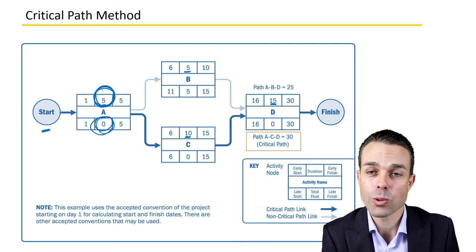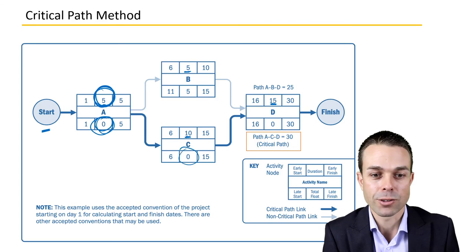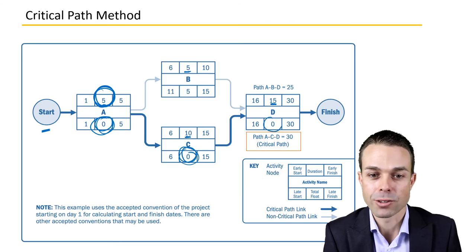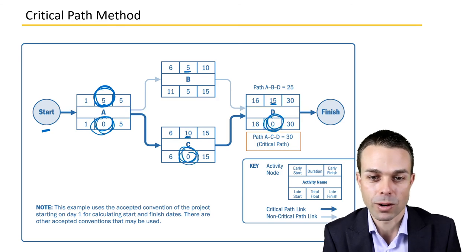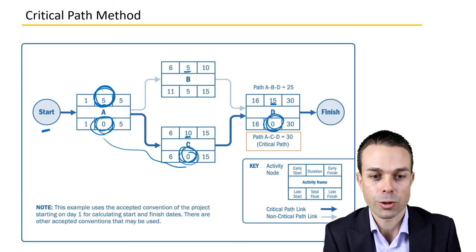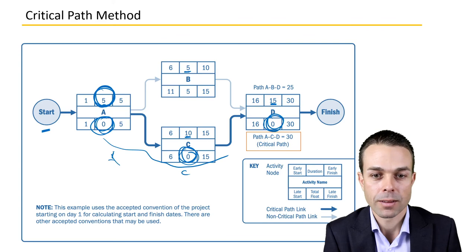So we've got zero days of float. So there's no leeway for this one. There's no leeway for this one. And there's no leeway for this one. So that means our critical path is A, C and D.